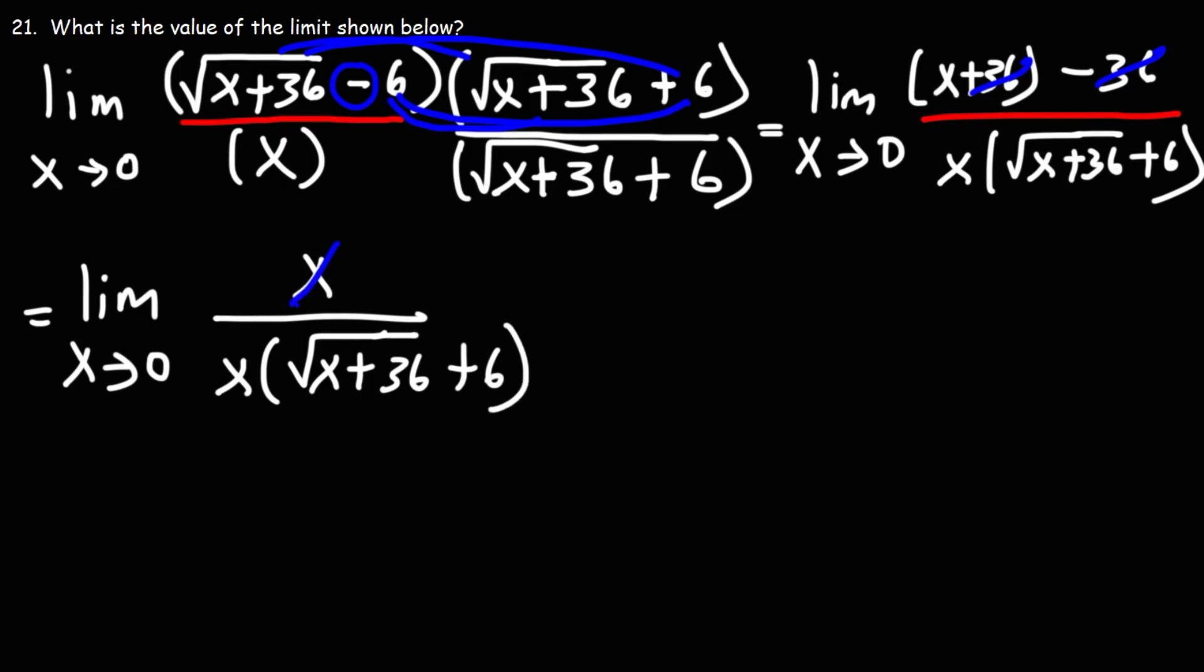Next, we could cancel the x variables. x divided by x is 1. And so we have the limit as x approaches 0 of 1 over the square root of x plus 36 plus 6.